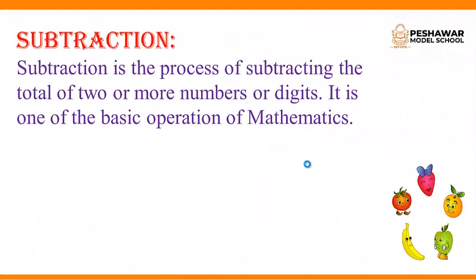What is subtraction? Subtraction is the process of subtracting the total of 2 or more numbers or digits. It is one of the basic operations of mathematics.